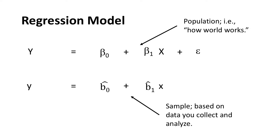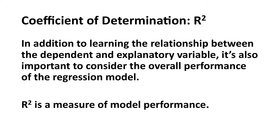Since we almost never have information on an entire population, we instead estimate a regression model based on a sample of data. So a sample regression model is y equals b subscript 0 hat plus b subscript 1 hat times x. The main objective of regression analysis is to uncover the relationship between the dependent variable, which we represent by y, and the explanatory variable, which we indicate by x. But it's also important to consider the overall performance of the regression model.